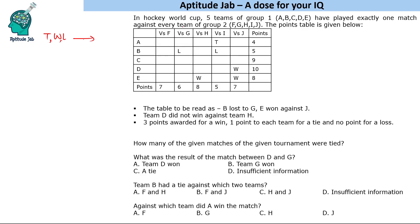It is also given that team D did not win against team H. Three points are awarded for a win, one point to each team for a tie, and no points for a loss. The total points given to each team are shown. Now let us find the number of wins, losses, and ties using the given points.